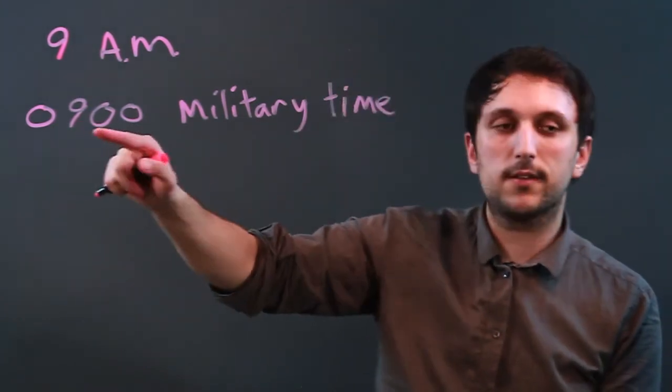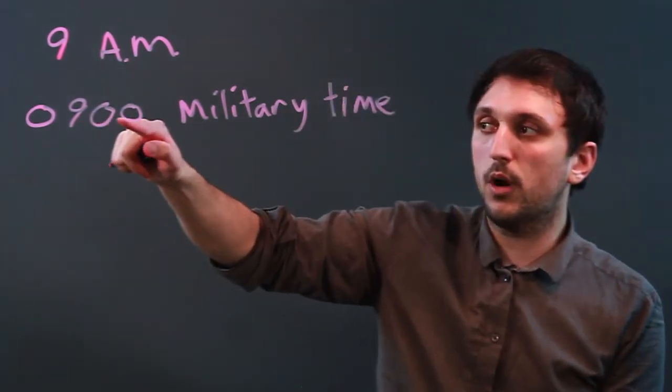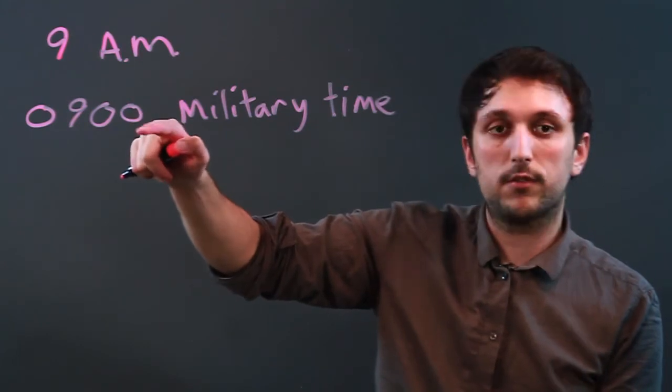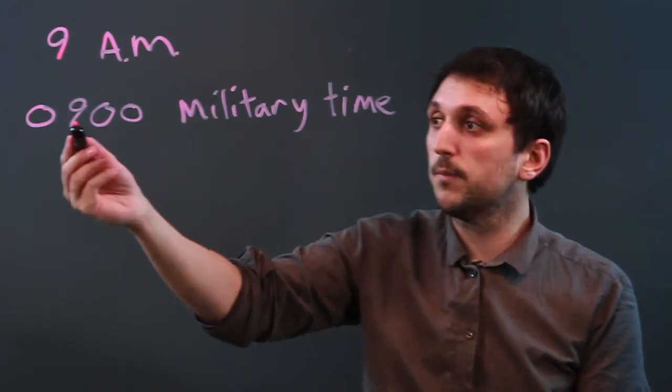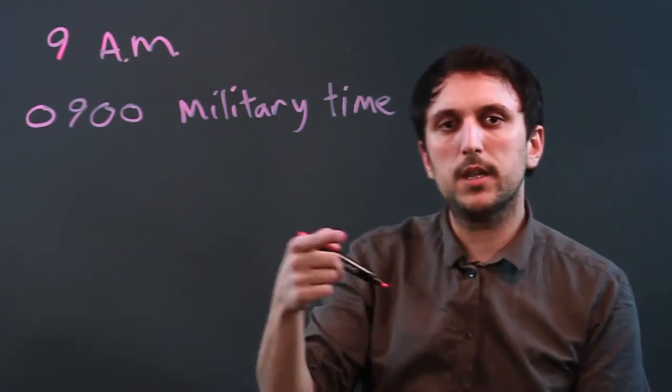Now the thing is, they like to say 0900, but the numbers don't go all the way up to 100. They only go up to 60, just like we say there's 9:59 and then 10 o'clock. So if we want to convert minutes to army time,